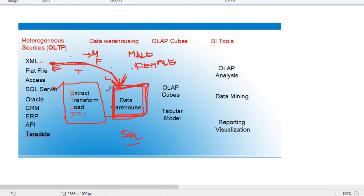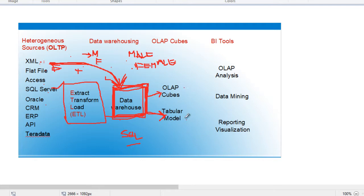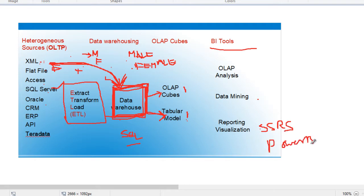Now we have collected the entire data from all vendors from the start of the company till date. But we cannot directly use this particular database. To make it more efficient, we need to build an OLAP cube or tabular model on top of this data warehouse, which increases performance. Once we develop the OLAP cube or tabular model, these become sources for other tools — that is called BI, business intelligence tools — covering data mining, reporting, and visualization. Examples include SSRS or Power BI.